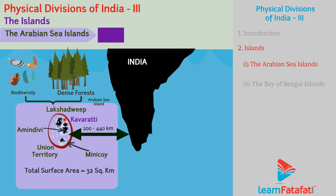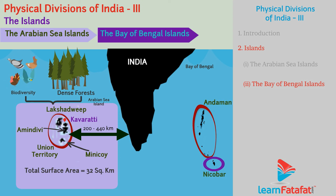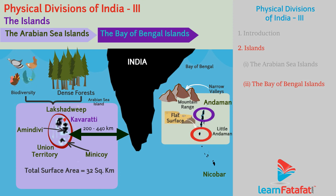The Bay of Bengal Islands include Andaman in the north and Nicobar in the south. The North Andaman Islands have a central mountain range and a number of narrow valleys. The Little Andaman has a nearly flat surface.